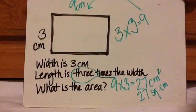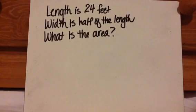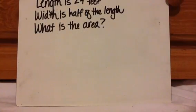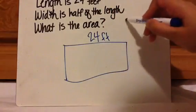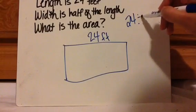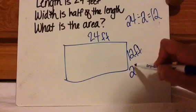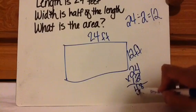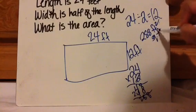We're going to do one more problem where there's no picture and I give you information and you have to draw and then solve. The length is 24 feet, the width is half of the length. What is the area? Press pause, solve the problem, and press play when you're ready to check. The width is half of 24, meaning divide by 2, so the width is 12. Then the area is length times width — 24 times 12 — which gives 288 feet squared or 288 square feet.